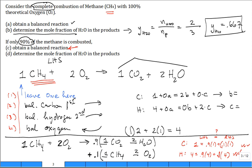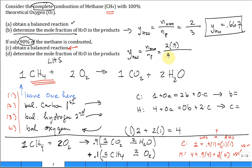Now determine the mole fraction of H₂O in the products for the incomplete combustion case. The mole fraction of H₂O equals the moles of H₂O divided by total moles of products. Moles of H₂O: 2 times 0.9. Total moles: 0.9 times (1 + 2) plus 0.1 times (1 + 2). Solving this gives approximately 60%, which dropped from the complete combustion value of 66.7%.